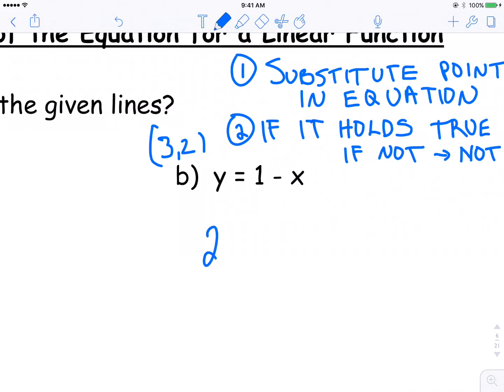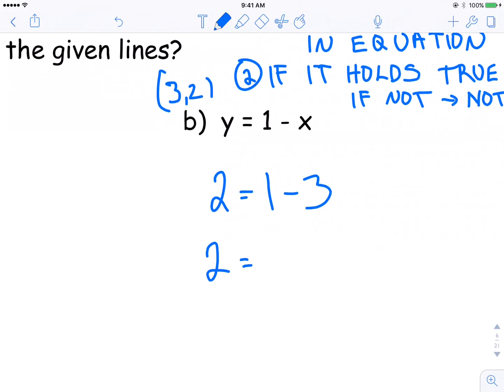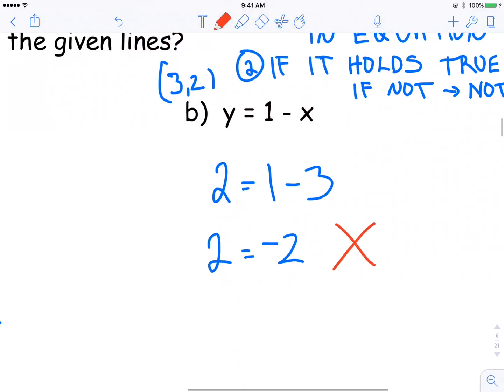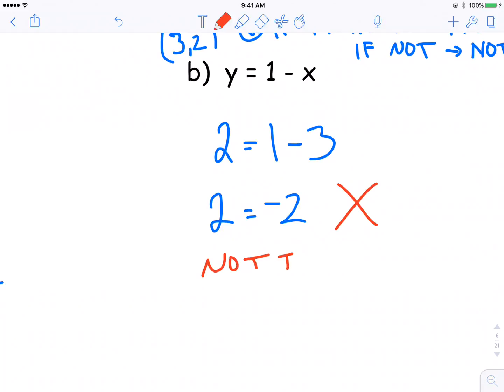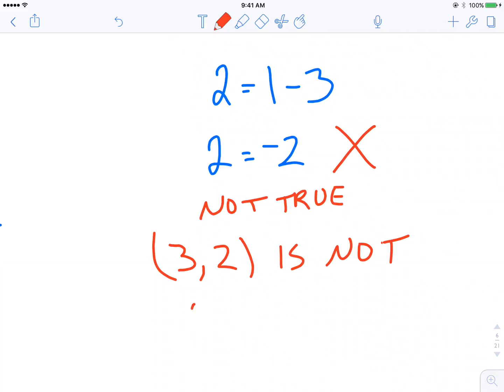So I'm going to substitute in 2 for y is equal to 1 minus 3. Well, 2 is equal to 1 minus 3 is negative 2. Those are not equal. I'm going to change that to a big red x. These are not equal. So it does not hold true. Because it's not true, this point (3, 2) is not on the line y is equal to 1 minus x.